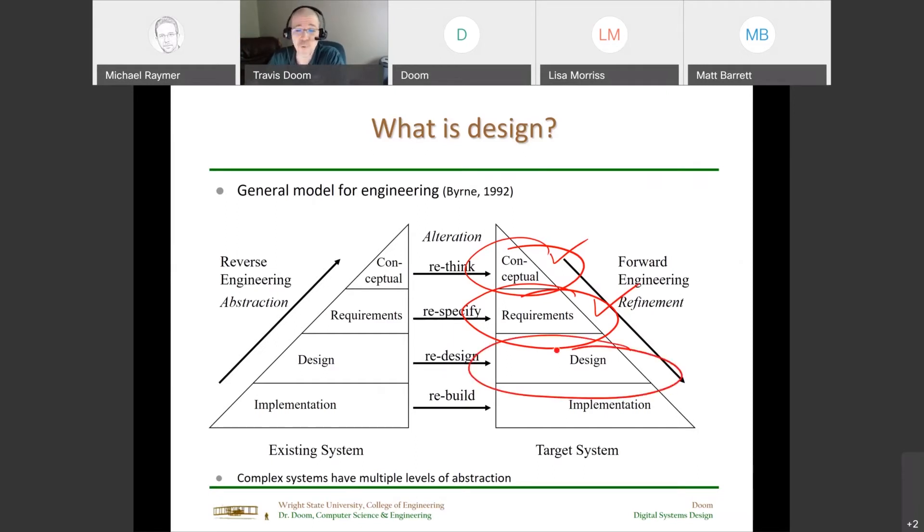Then, and only then, should you really get into the design phase, which is now, how can I use the available tools, technologies, the understanding that humanity has of the way the world works right now, all of science and manufacturing? What can I put together to address those requirements? How would it look? Of all the different ways I could solve it, which one is best according to the requirements, the metrics that I was giving in the requirements? And then finally, you actually build it. That's the implementation phase. And the implementation phase is not necessarily done by engineers.